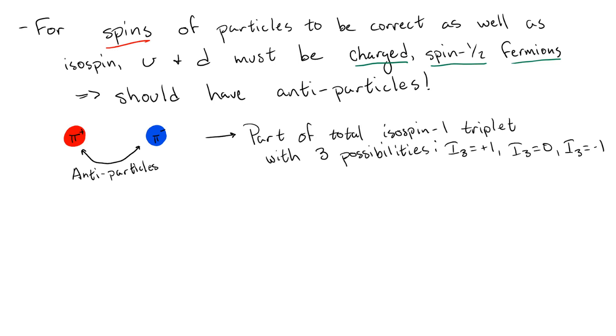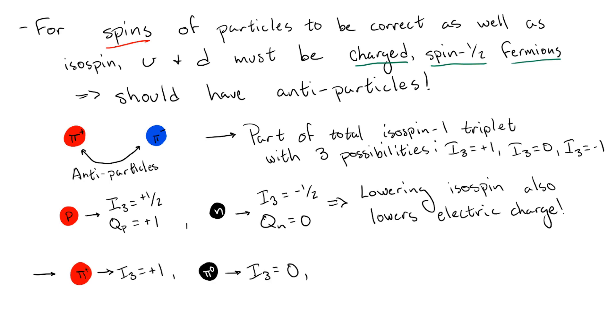We know that the pion triplet has total isospin one, which has three individual isospin states, plus one, zero, and minus one. As we saw with the baryons, there is a direct correspondence between decreasing the isospin of the state by one unit and decreasing the electric charge by one unit. So, we might suppose that the pi plus is the isospin plus one state, the pi zero is the isospin zero state, and the pi minus is the isospin minus one state.